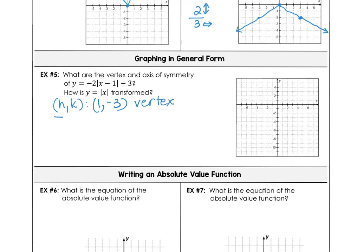The negative 2 on the a value flips our graph across the x-axis, plus it stretches. The 2 behaves like a slope. The axis of symmetry is at x equals 1, the x coordinate of the vertex.